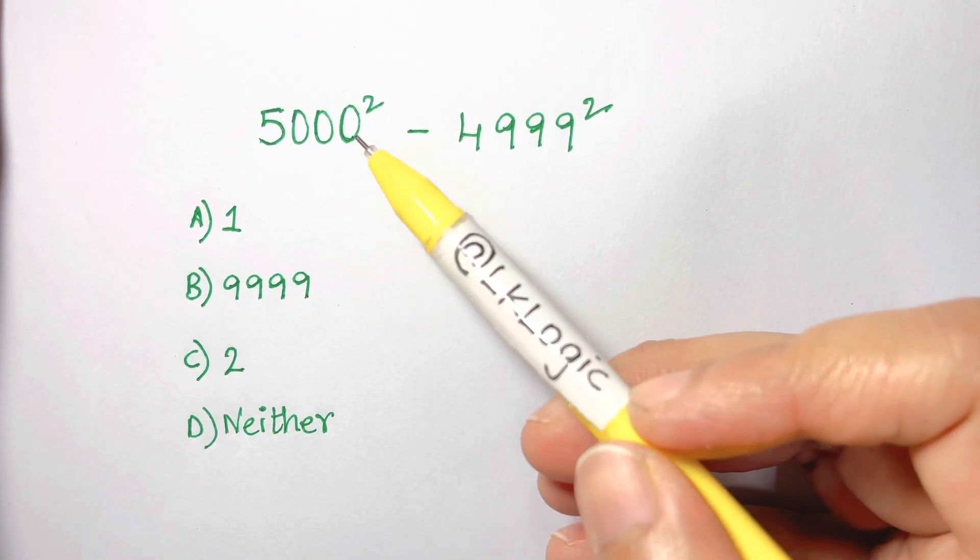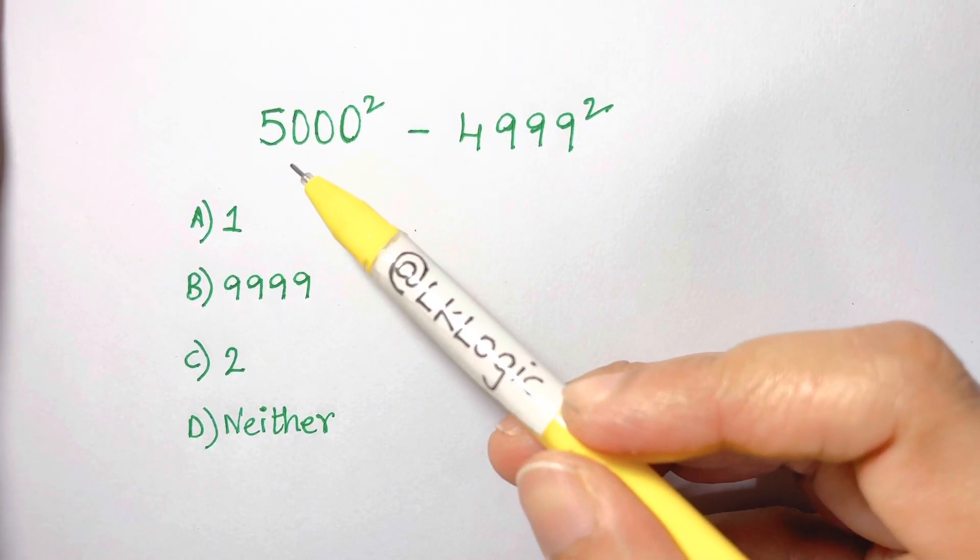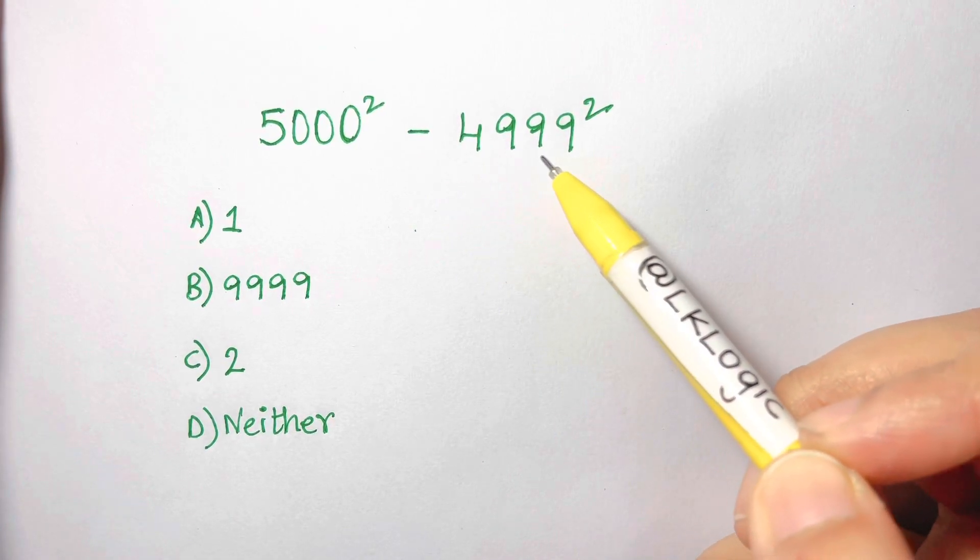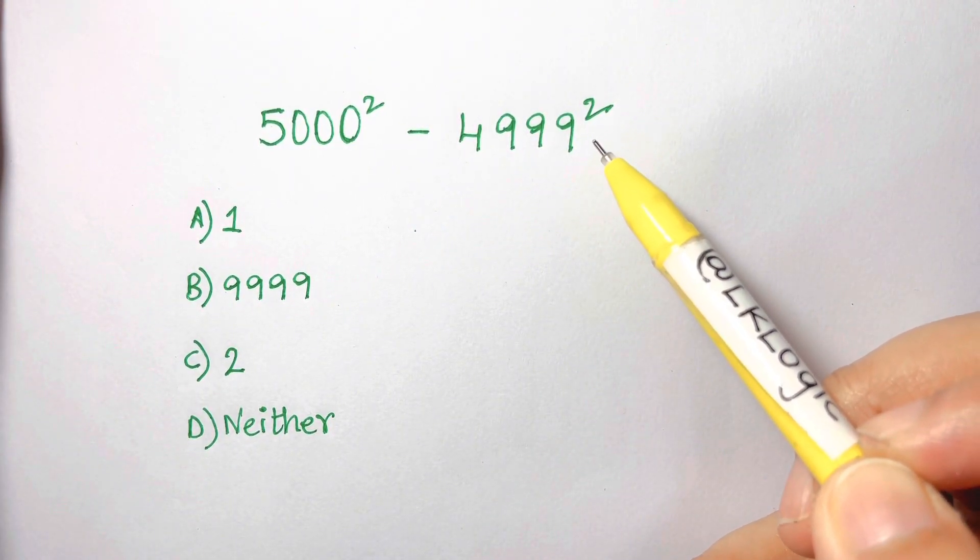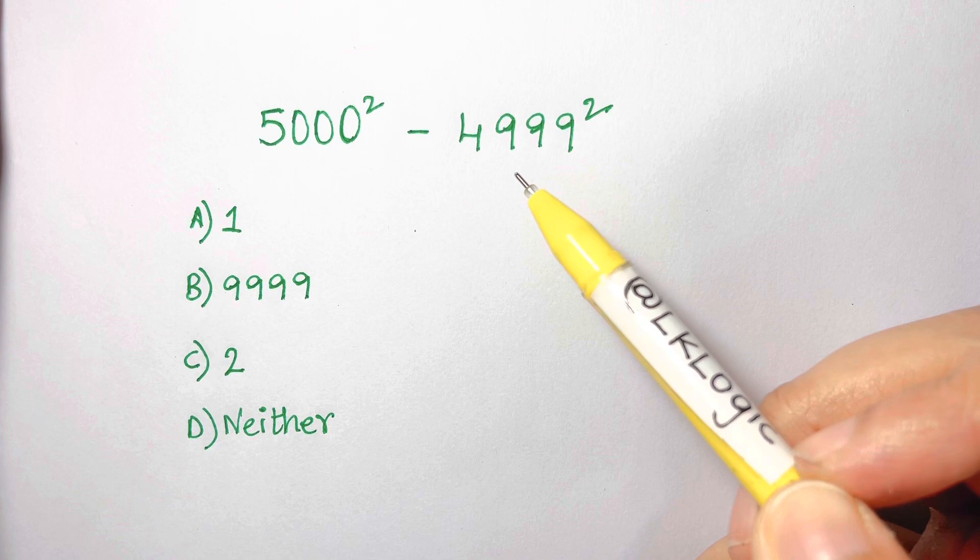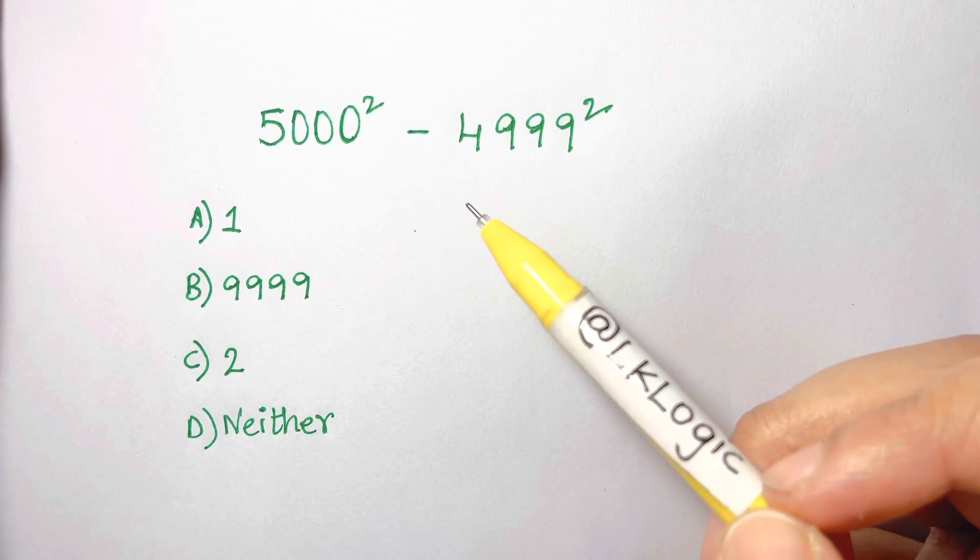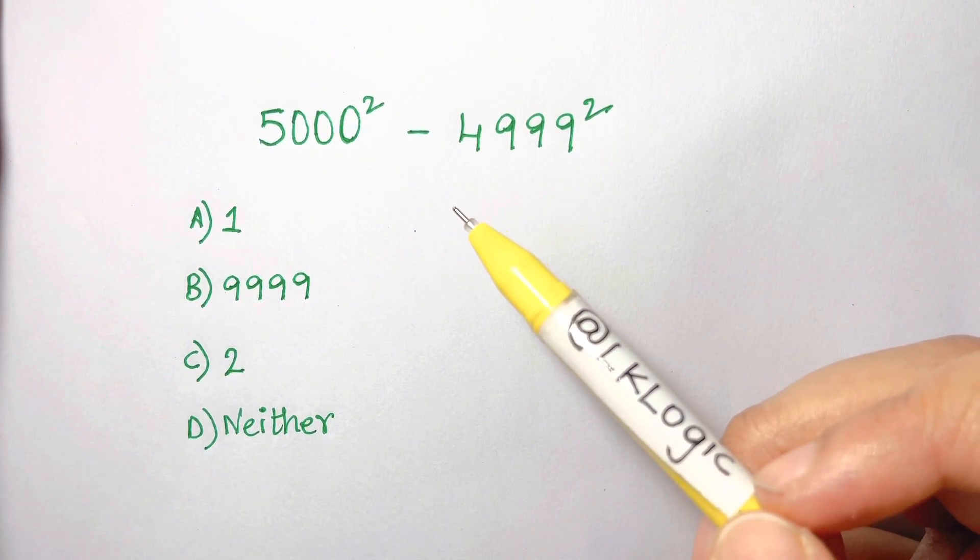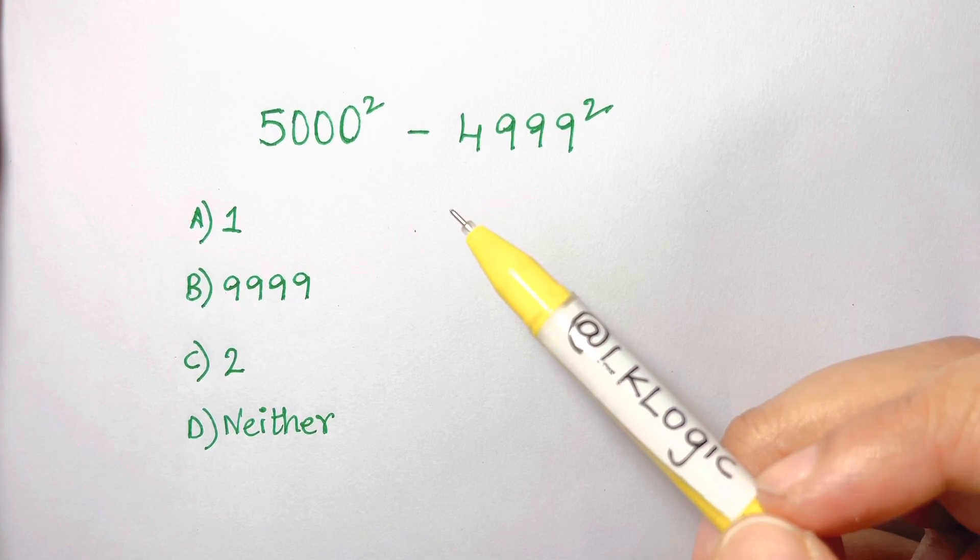Hi everyone, I have an amazing squad problem: 5000 squared minus 4999 squared equals what? Now you don't need a calculator for solving this. You know why? Because it is very simple. You can just use your mind to calculate this easiest problem ever.